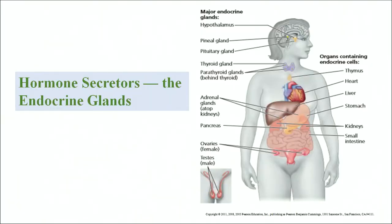Now let us look at the various endocrine glands and the hormones they secrete. The endocrine glands present in the body include the hypothalamus, pineal gland, pituitary gland, thyroid gland, adrenal cortex, pancreas, ovary, and testes. These glands are also connected to organs like the thymus, heart, liver, stomach, kidney, and small intestine. We will go through each gland, its hormones, and their functions.